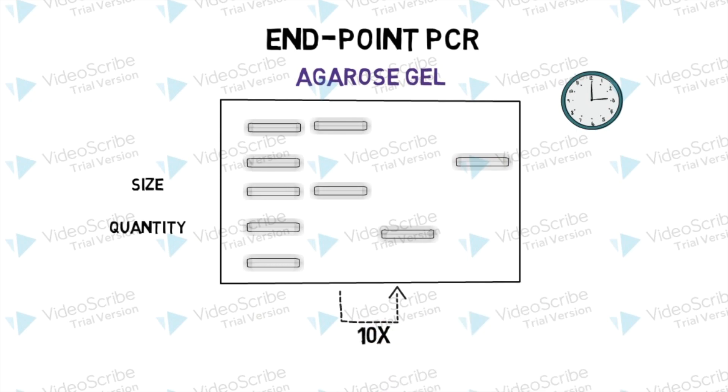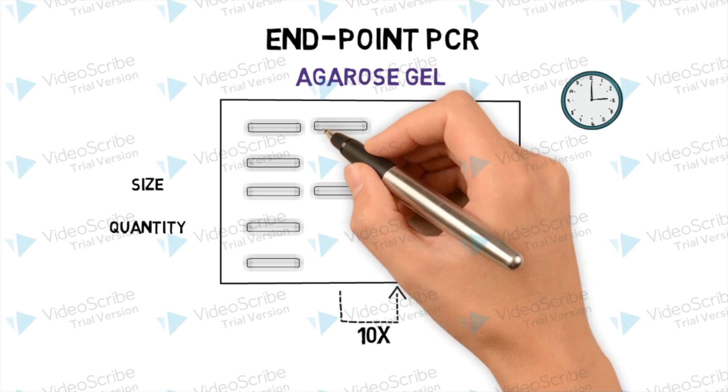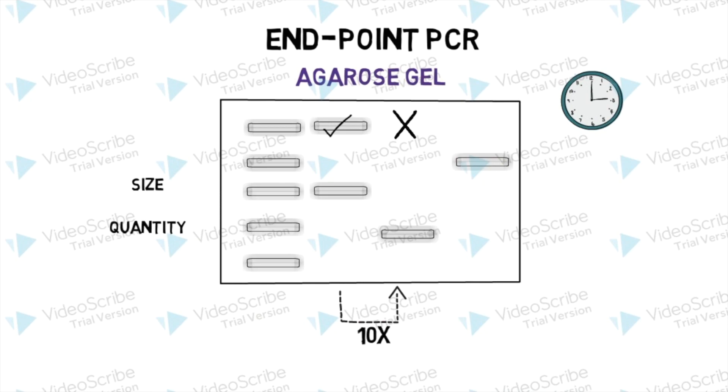In contrast, qPCR can detect a two-fold difference. As a result, endpoint is mostly used for detecting the presence or absence of a target.